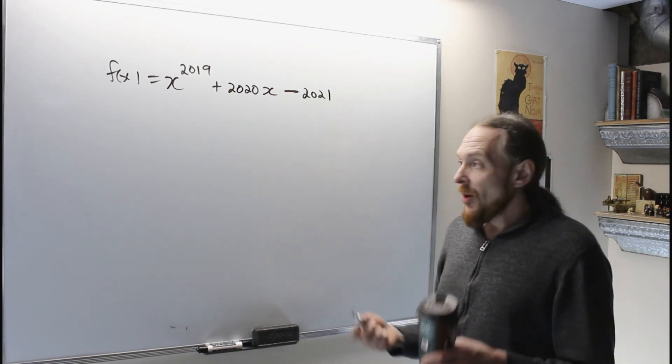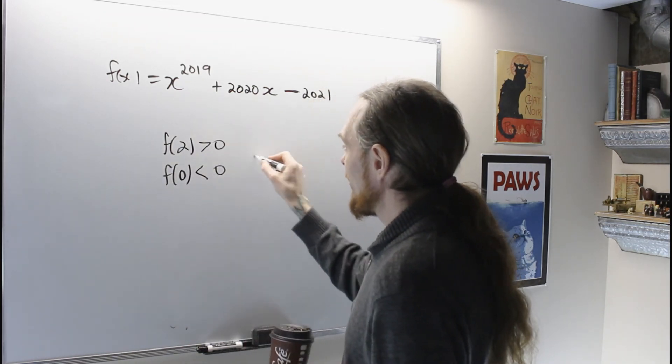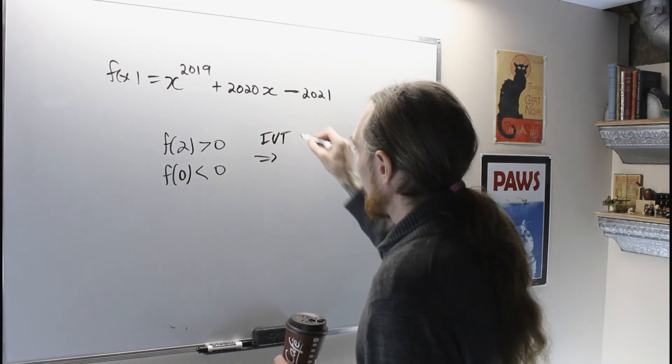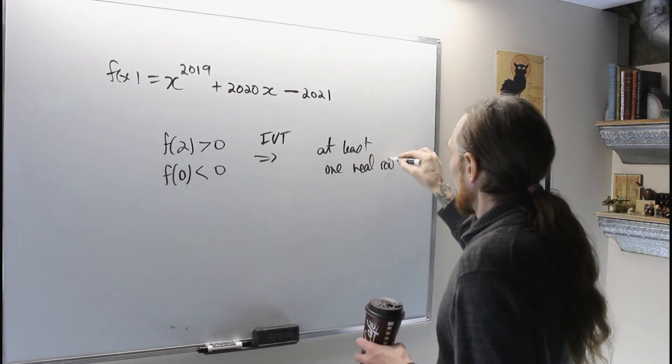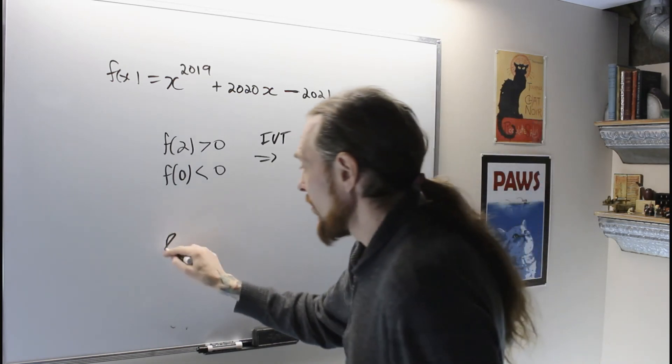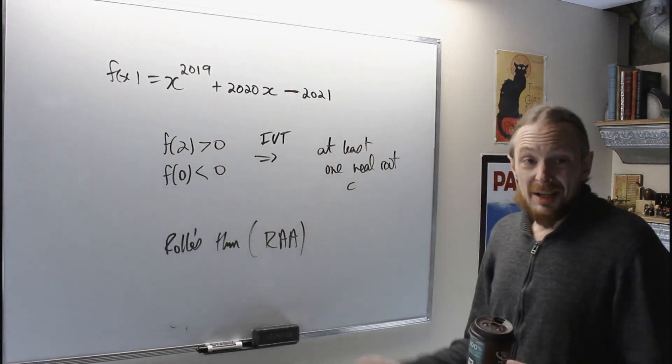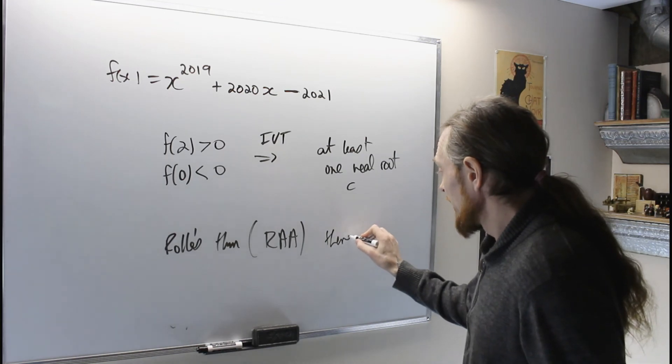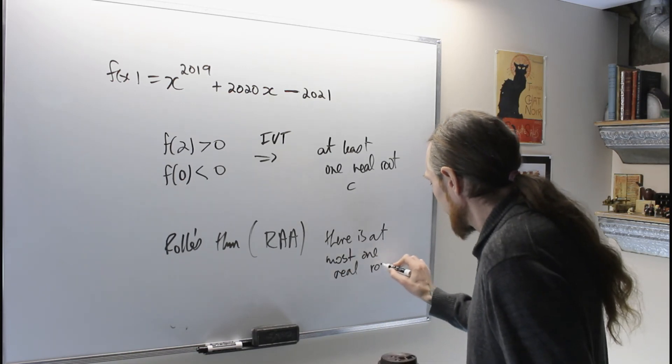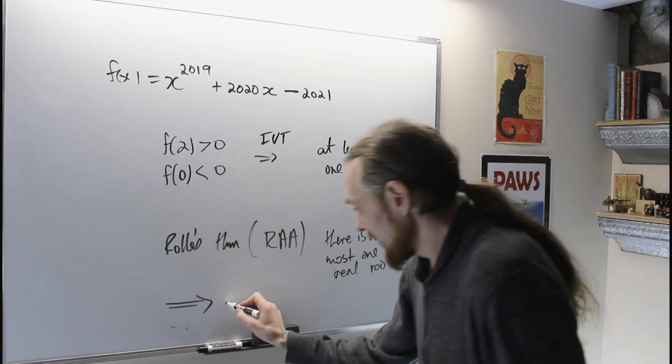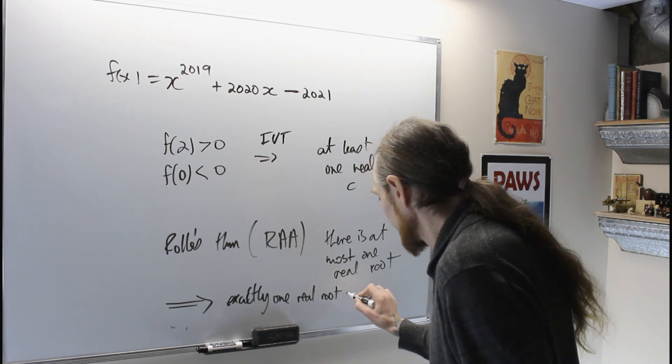Therefore, f of x has at most one real root. So we saw that f of 2 was greater than zero and f of 0 was less than zero, which implies by the intermediate value theorem there is at least one real root. C and Rolle's theorem and reductio ad absurdum proof by contradiction argument shows that there is at most one real root. These two things combined show that there is exactly one real root for f of x.